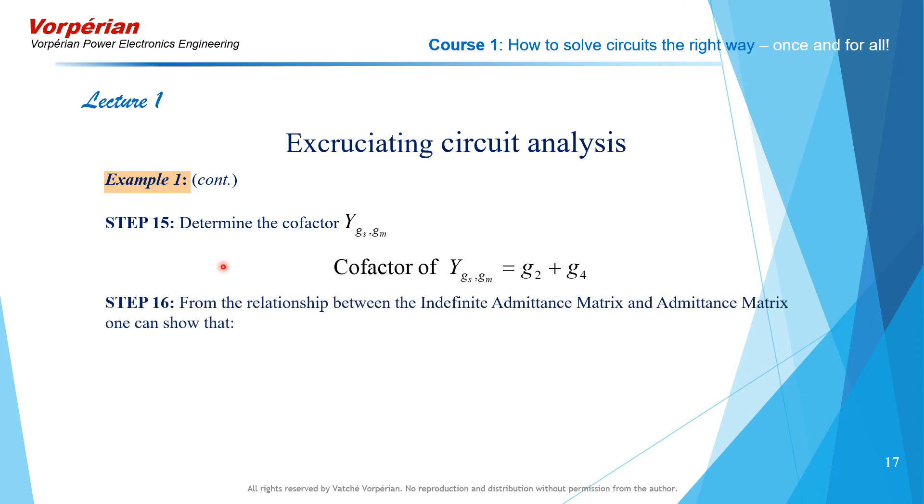from the relationship between the indefinite admittance matrix and admittance matrix, we obtain the expression of the input resistance with gm as a parameter. It is given by the ratio of these cofactors. I think this answer needs some good discussion.